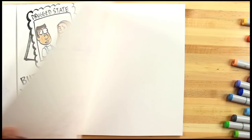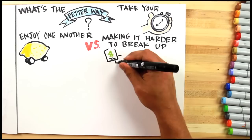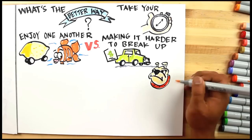What is the better way? Take your time to enjoy one another without doing the things that make it harder to break up. Go ahead and fix up the current lemon, don't sign for a new car. Buy Princess the fish, not Princess the puppy. Keep your own place, don't sign a lease together.